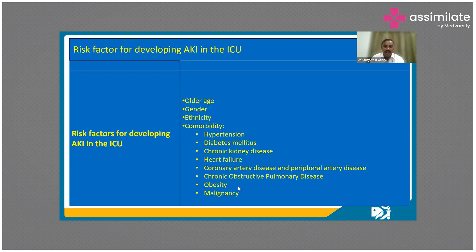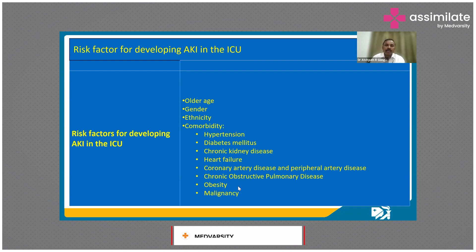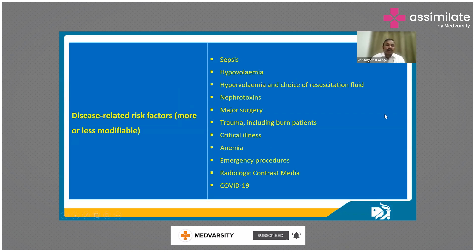The presence of comorbidities — hypertension, diabetes, CKD, heart failure, coronary artery disease, peripheral vascular disease, chronic obstructive pulmonary disease, obesity, and malignancy — are all independent risk factors for development of AKI. These are unfortunately non-modifiable, though some can be partially controlled.